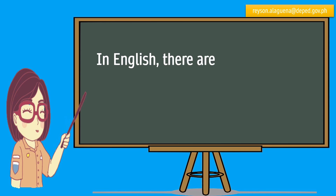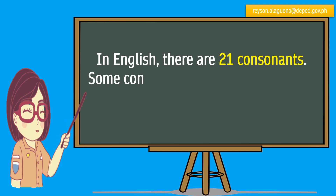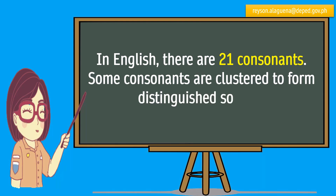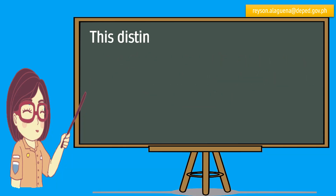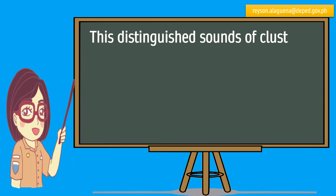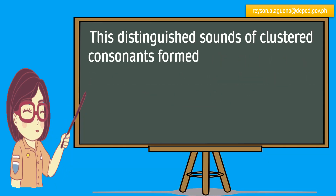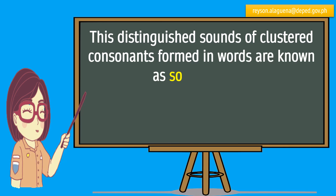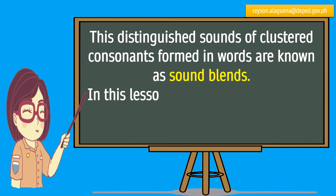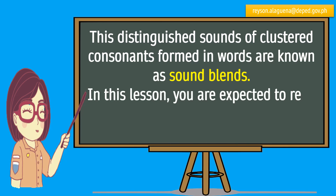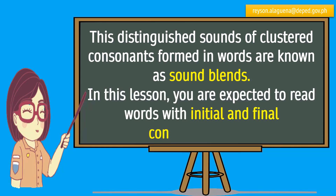In English, there are 21 consonants. Some consonants are clustered to form distinguished sounds. These distinguished sounds of clustered consonants formed in words are known as sound blends. In this lesson, you are expected to read words with initial and final consonant blends.